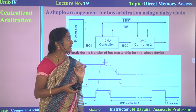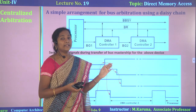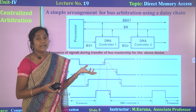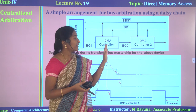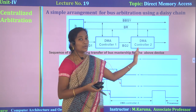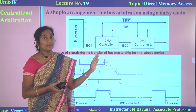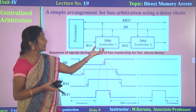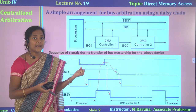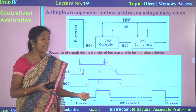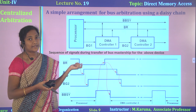Likewise, DMA controllers 1, 2, 3, 4 are connected and activated in rotating priority order — first DMA 1, then DMA 2, then 3, 4, and then 1 again. DMA controllers take permission from the processor to get the bus and perform the data transfer operation. The processor acts as the central arbiter.